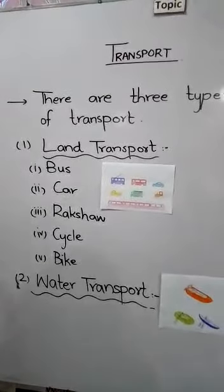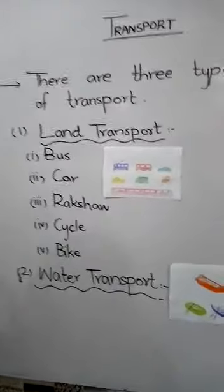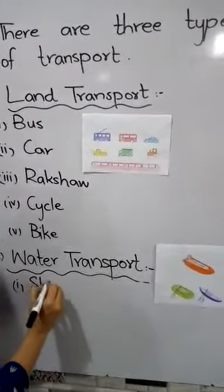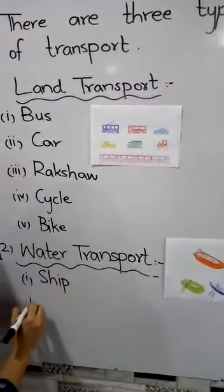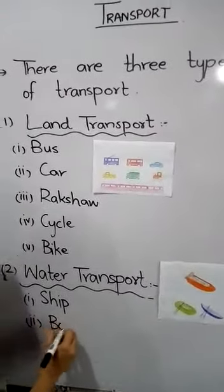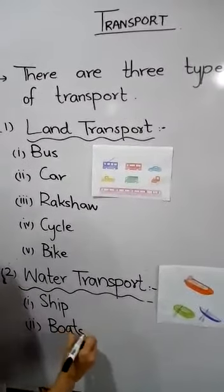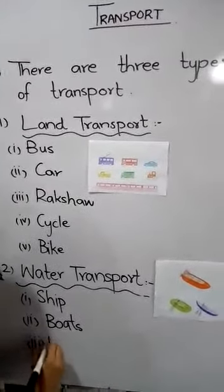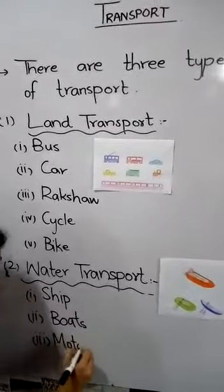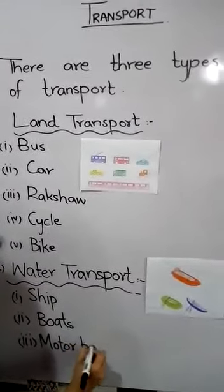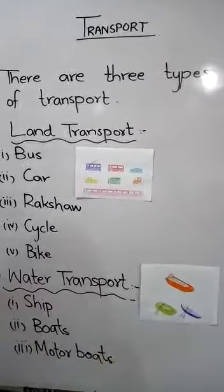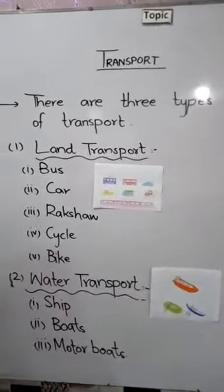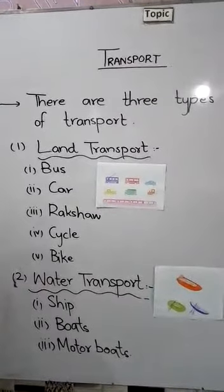Now you will tell me the names of some of the vehicles that we use in water transport. Ship, boats, motor boats, cruise liners, submarines — these are some of the vehicles we use in water.